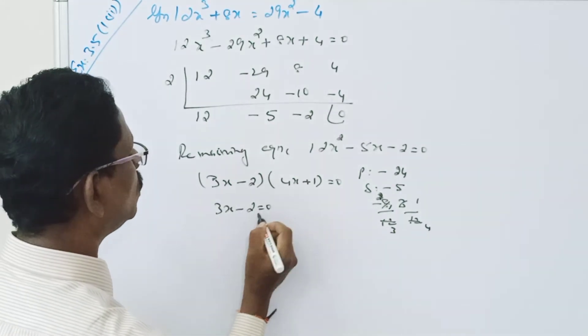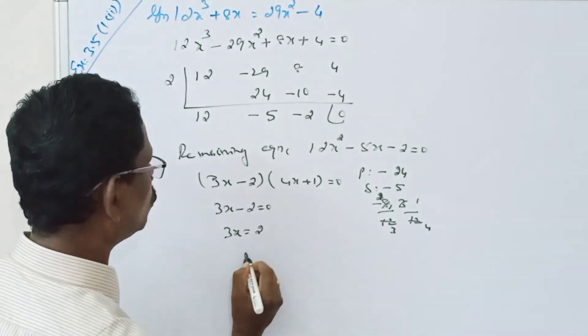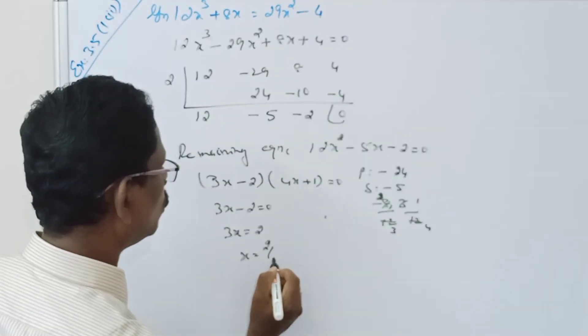3x minus 2 equal to 0. 3x is equal to 2. x is equal to 2 by 3.